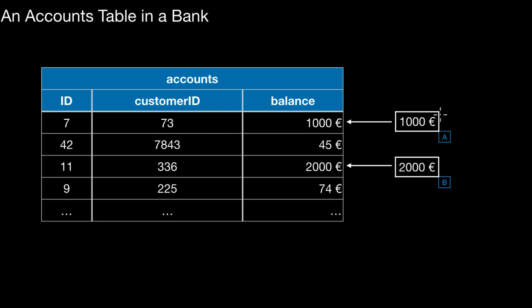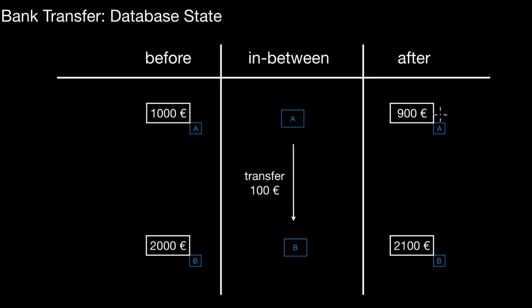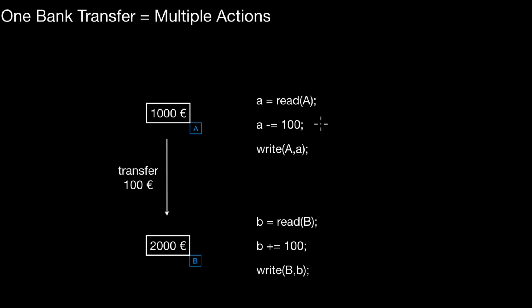What the bank transfer does is transfer 100 euros from A to B. We can think about a before state and an after state of the cells. Before, we have 1000 euros in A and 2000 in B. After the transaction, A is down to 900 and B is up to 2100 — an addition of 100 euros. What happens in between while the transaction is running is undefined.